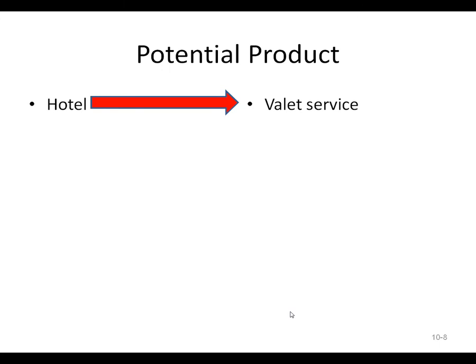The potential product is what the product could possibly be in the future. For a hotel, maybe valet service — though many hotels already have that, maybe Motel 6 will have valet service someday. For a car, time travel — maybe someday cars can be involved in time travel. For a mobile phone, maybe you can use it to start your car from afar. For a drill, automatic drilling via remote control.